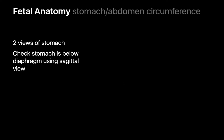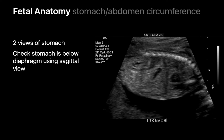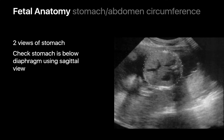Our assessment of the fetal torso requires us to evaluate the stomach in two orthogonal planes: a sagittal plane to confirm the stomach's sub-diaphragmatic location, and an axial plane to confirm its sidedness. We pay attention to the amount of fluid in the stomach. On a transverse image at the level of the stomach, we evaluate the size of the fetal abdomen by measuring the abdominal circumference.